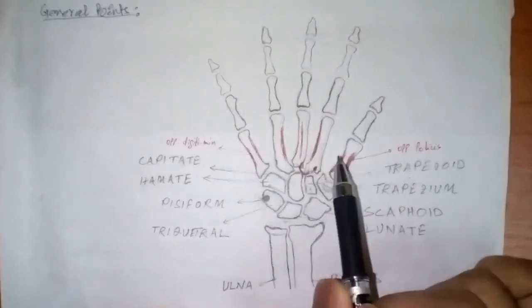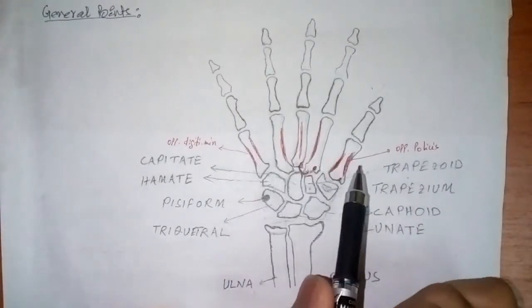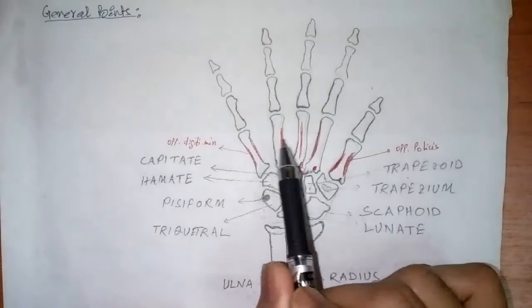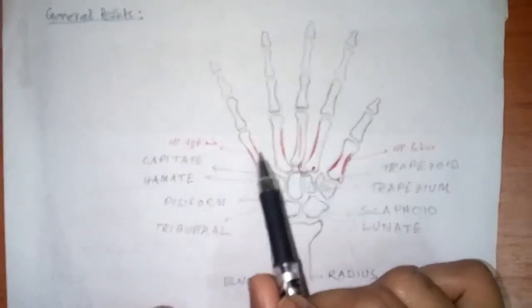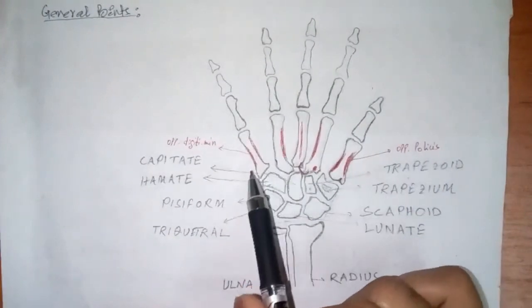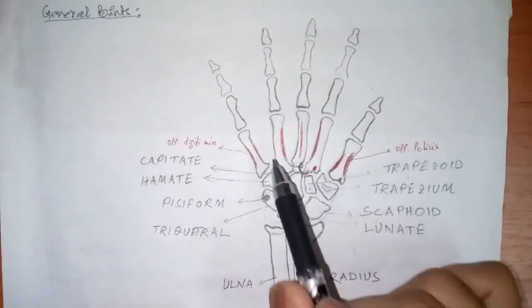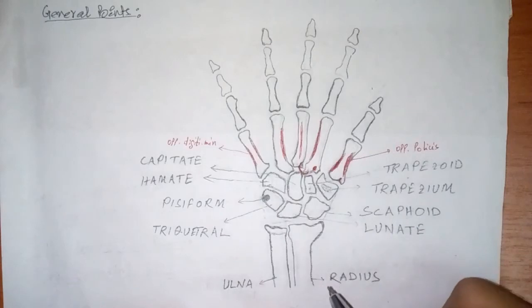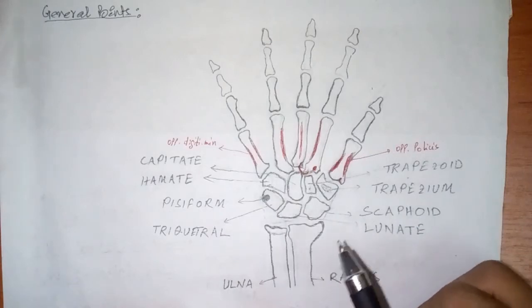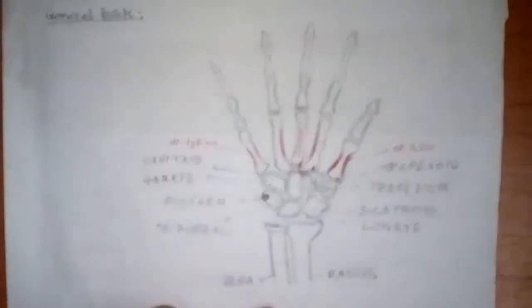There are five miniature long bones, which are numbered from the lateral side to the medial side as first, second, third, fourth, and fifth. These miniature bones are long bones, but they are small in size compared to the long bones in the upper and lower limb — for example, the humerus and the femur.